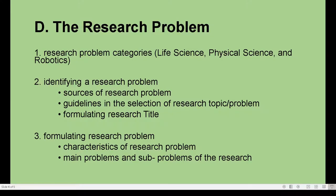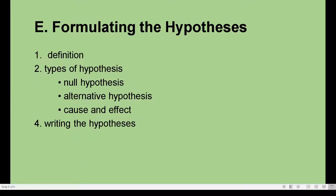Also included are: organization, analysis and interpretation of data, and formulation of conclusions. Part of the second quarter is also the research problem. There are different categories in SIP — life science, physical science, and robotics — depending on your interest. Topics also include identifying a research problem, sources of the research problem, guidelines in selecting the research topic, formulating a research title, characteristics of the research problem, main problems and sub-problems, and formulating the hypothesis — defining it, identifying types such as null, alternative, cause and effect, and writing the hypothesis.